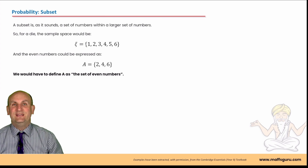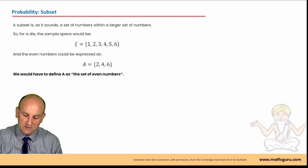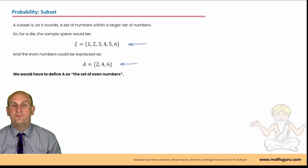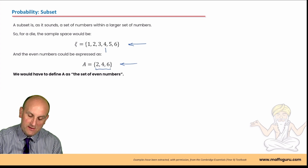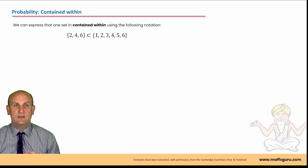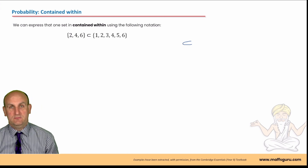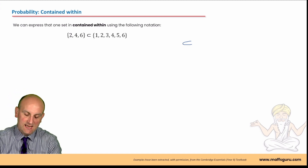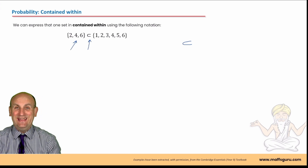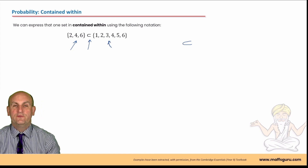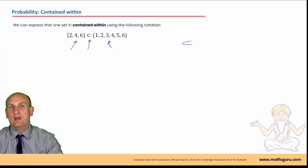Then we have something called a subset. A subset is a set of numbers that actually comes from a larger set of numbers. So if I had my sample space of one two three four five and six, we could say that event A could be the even numbers. In that situation A is a subset of my sample space because the numbers two, four, and six appear in my sample space. We can use the word subset or we can use a symbol that looks like an elongated C - it means 'contained within'.